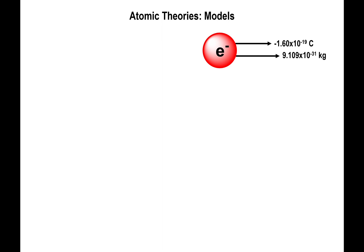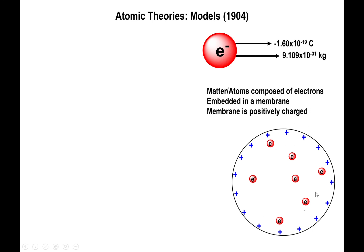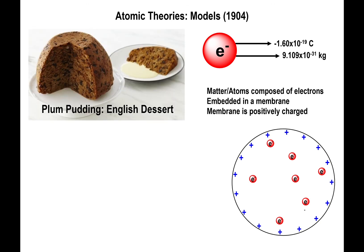Here is where some atomic theories start taking shape. Thomson looks at the fact that electrons are present in all matter but have a negative charge, so there must be something inside matter with a positive charge that counteracts and cancels it. He starts thinking that perhaps matter is composed of a membrane in which electrons are located, and the membrane itself has positive charge permeating throughout it.